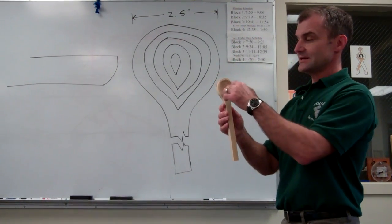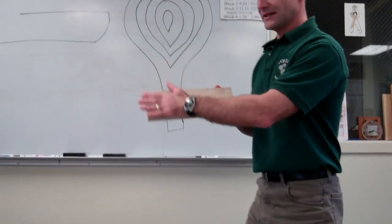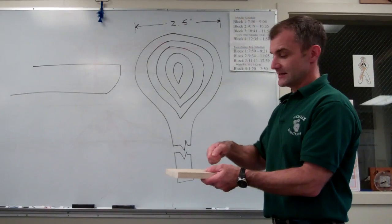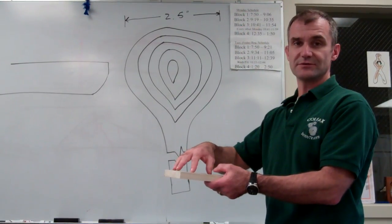And when I'm done CNCing the bowl in, I can take this rectangle, clamp it down to the tabletop, and then I'm going to use hand gouges to smooth it out, and then power sanders to smooth that.